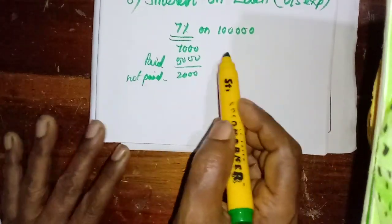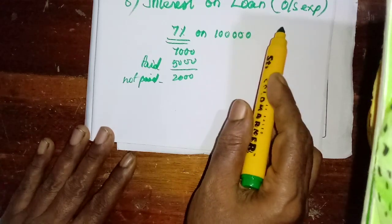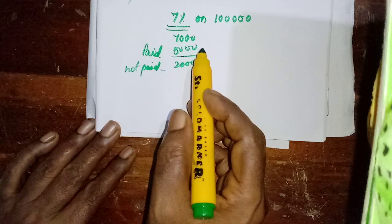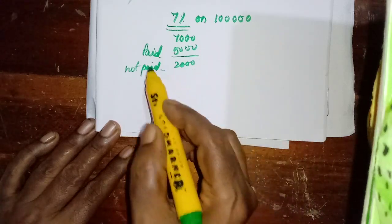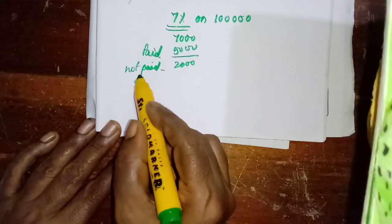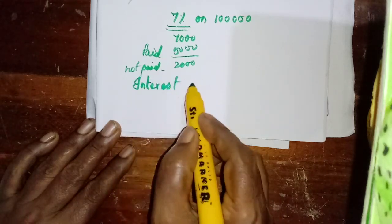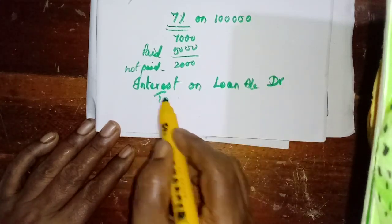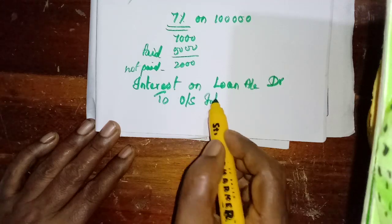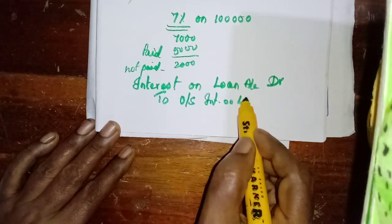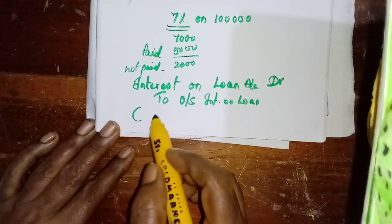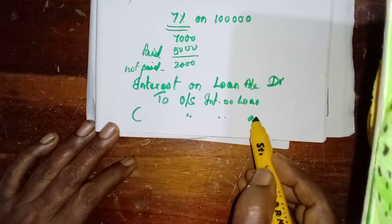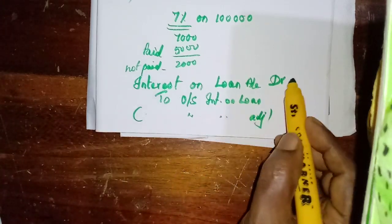This is the outstanding expense, so we have to consider this also as an expense and write the adjusting entry. What is the adjusting entry for outstanding expense? The expense account is debited. Here the expense name is interest on loan, so: Interest on Loan Account Dr to Outstanding Interest on Loan — amount 2,000.